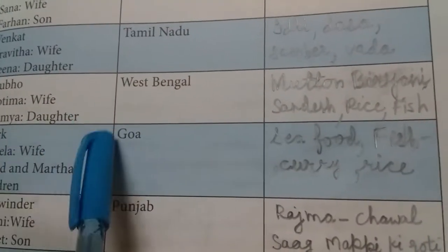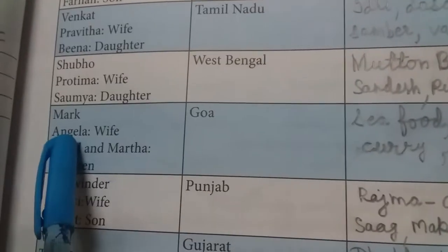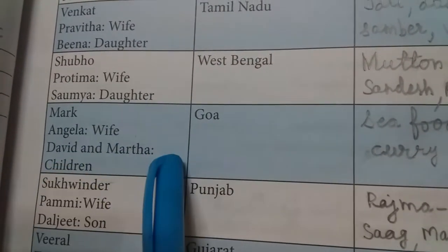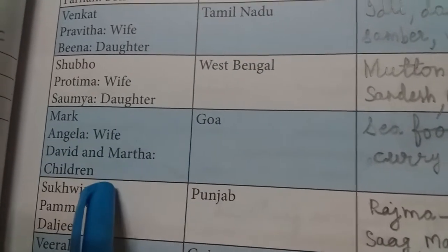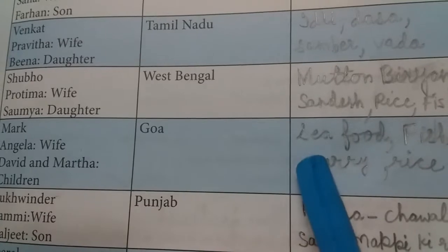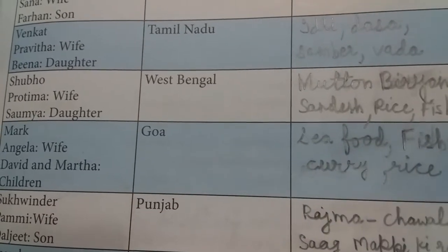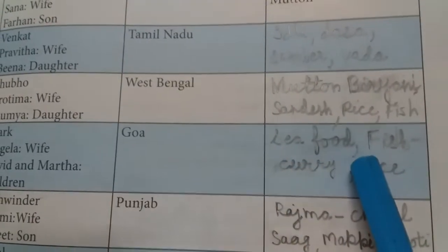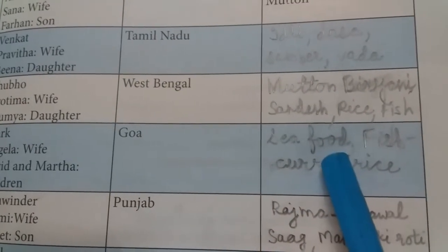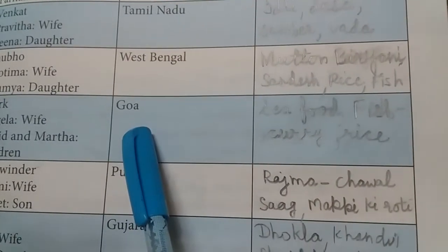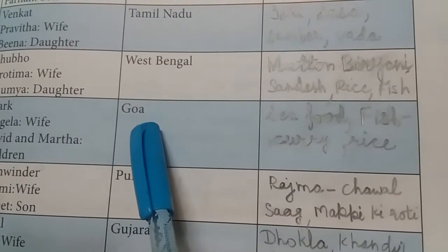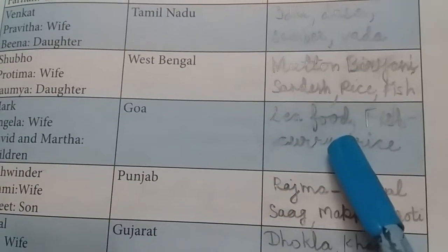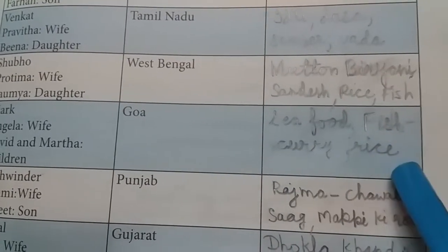The next family: husband's name is Mark, wife's name is Anzala, and their children are David and Martha. Mark, Anzala, David, and Martha belong to Goa. Their favorite food is seafood, fish curry, and rice. Goa के लोग seafood जैसे crab और lobster पसंद करते हैं क्योंकि Goa समुद्र के किनारे स्थित है।